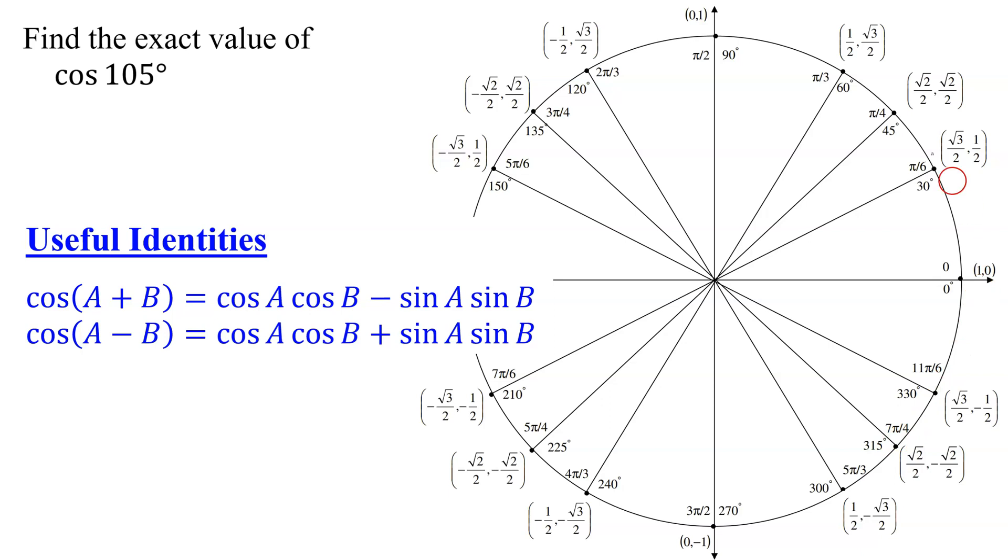So is it possible to combine two angles on the unit circle, either by addition or subtraction, and land up with 105 degrees? Yes, there are in fact quite a few different ways of doing this. And the one that seems most obvious to me is 45 plus 60 add up to 105 degrees.